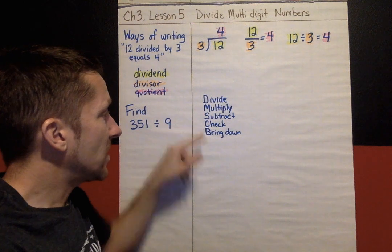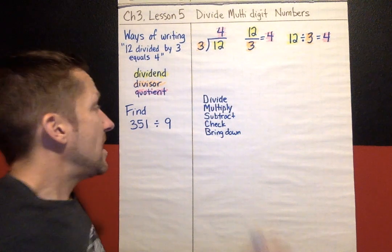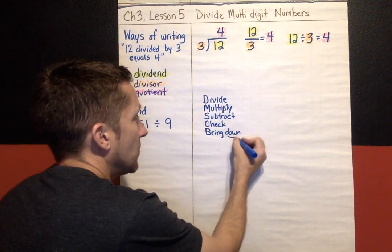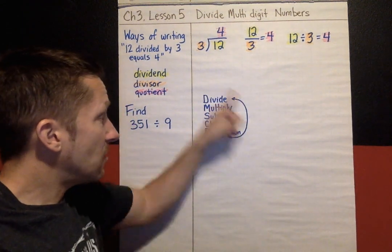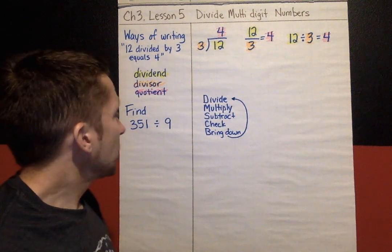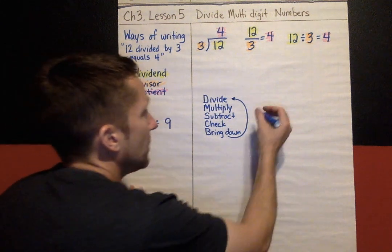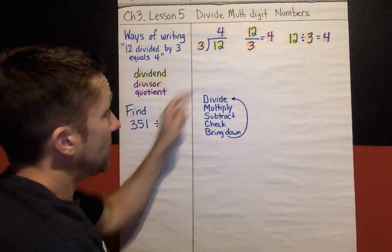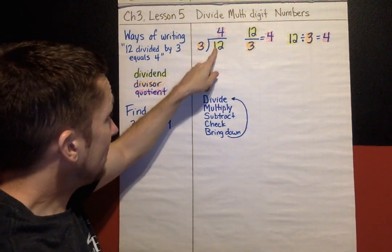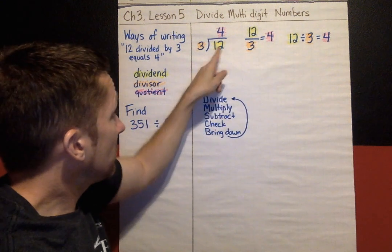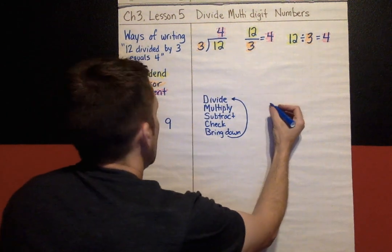We've also talked about a mnemonic to help you remember the steps. Divide, multiply, subtract, check, bring down. A way that you can remember that is, does McDonald's sell cheeseburgers? And this is actually a loop. When you get down to this, you go right back to divide and you just keep repeating these steps over and over. Let's take a look at 351 divided by 9 following these steps. So again, I'm showing, I'm going to go back to my patterns up here. I want to write it like this. 351 is going to be the number on the inside and 9 is going to be the divisor.